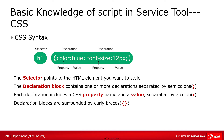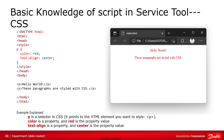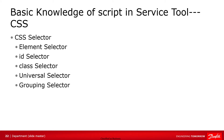Let's take a look at the syntax of CSS. It consists of two main parts: selector and declaration in curly braces. The selector points to the HTML element you want to style. The declaration block contains one or more declarations separated by semicolons. Each declaration includes a CSS property name and a value separated by a colon. Multiple CSS declarations are separated by semicolons, and the declaration block is surrounded by curly braces. In this example, p is the selector in CSS — it points to the two paragraphs in HTML. Color is a property, and red is the property value. Text-align is a property, and center is the property value. There are several kinds of selectors: element selector, id selector, class selector, universal selector, and grouping selector.